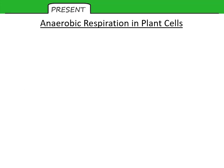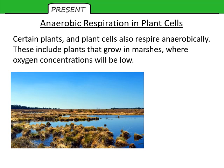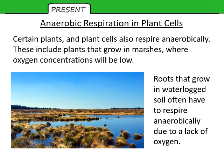We'll finish by looking at anaerobic respiration in plants and plant cells. Plants can respire both aerobically and anaerobically. Plants that respire anaerobically often grow in marshes, bogs, and swamps — areas where the soil and particularly the roots are waterlogged or covered in water. The root cells have adapted to be able to respire anaerobically so they can release energy from glucose despite the lack of oxygen.